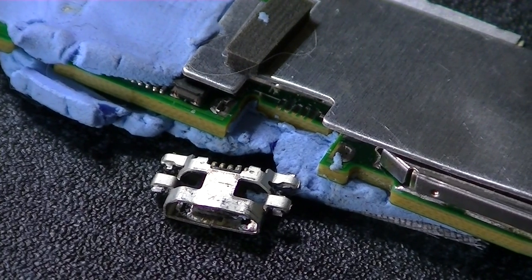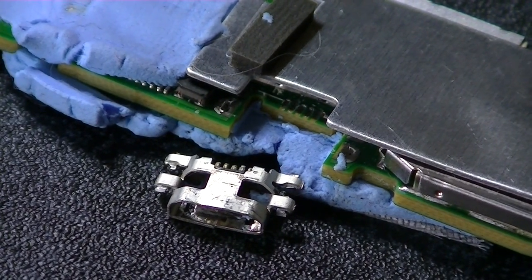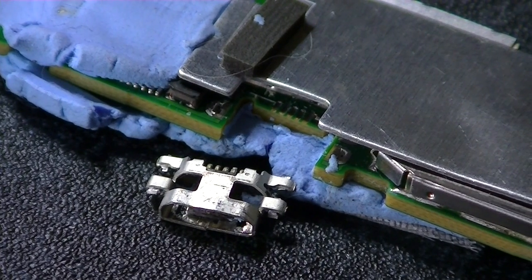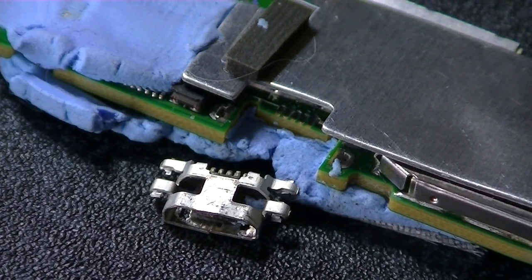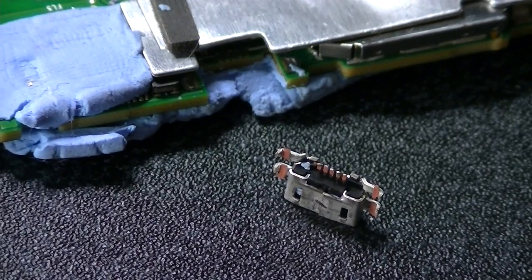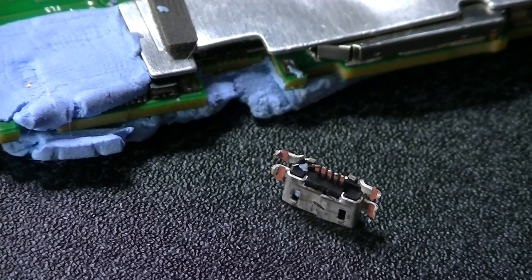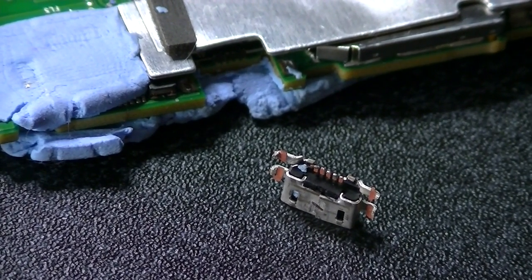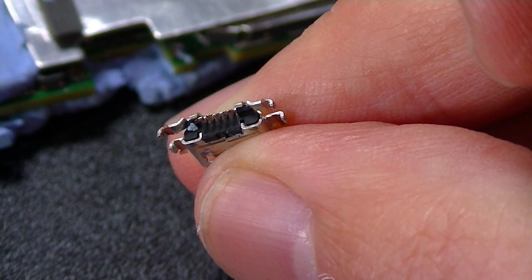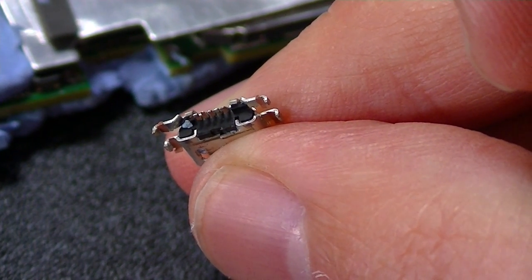The micro USB socket parted company with the rest of the Fire TV stick, ending any chance of repair. Clearly it had become seriously weakened by the road traffic accident, and this had nothing to do with any other outside forces such as pliers, for example.